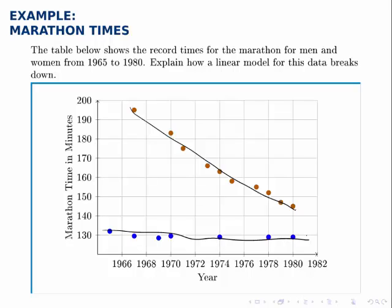But what's the problem with this? Why can't we just use this linear model to predict forward and see what record times we expect to see in the future? To show this, let's actually build the linear model and then make predictions with it.